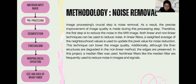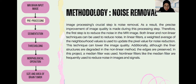The next methodology is noise removal. In this processing step, precise improvement of image quality is achieved. The first step is to reduce the noise in the MRI image. Both linear and non-linear techniques can be used to reduce noise. In linear filters, a weighted average of neighborhood values is used to update the pixel value, though this technique can lower image quality. In the non-linear method, the edges are preserved although fine structures may be degraded. In this project, a median filter was used, as non-linear filters like the median filter are frequently used to reduce noise in image signals.